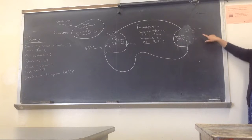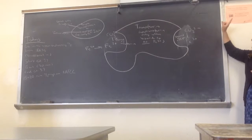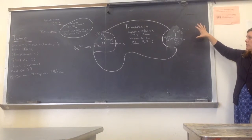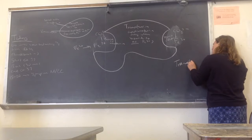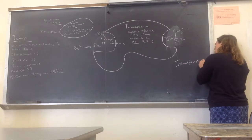I'm trying to go in the order of the book, but we need to know that part. So transferrin binds up to two iron molecules. It can bind only one or it can bind two.